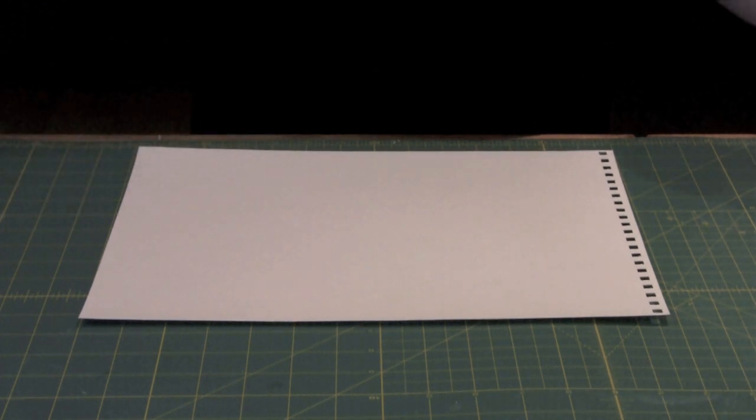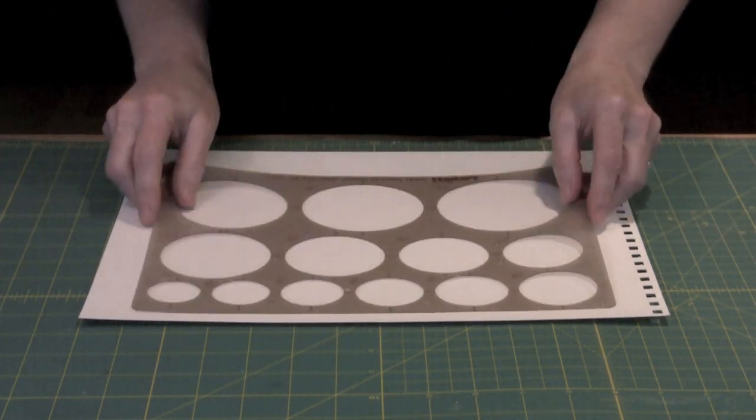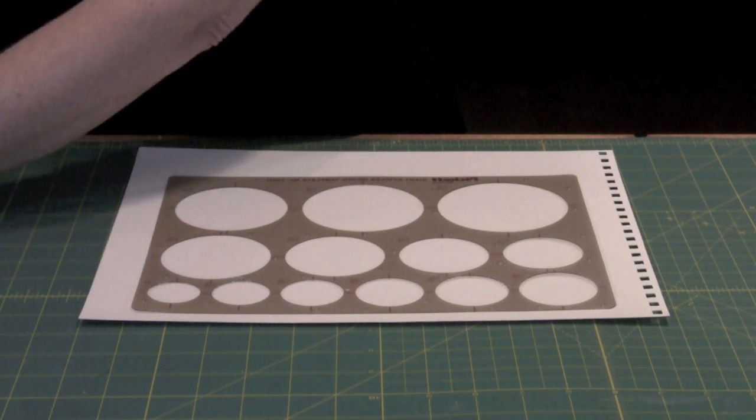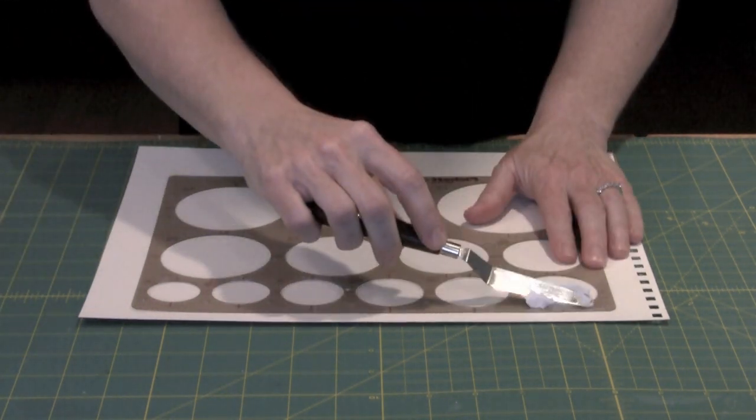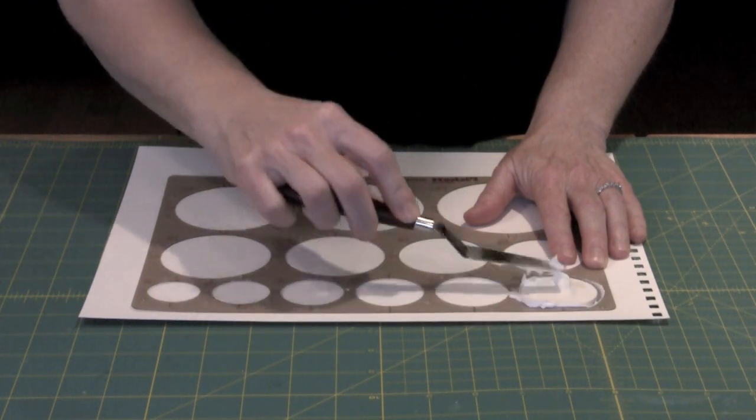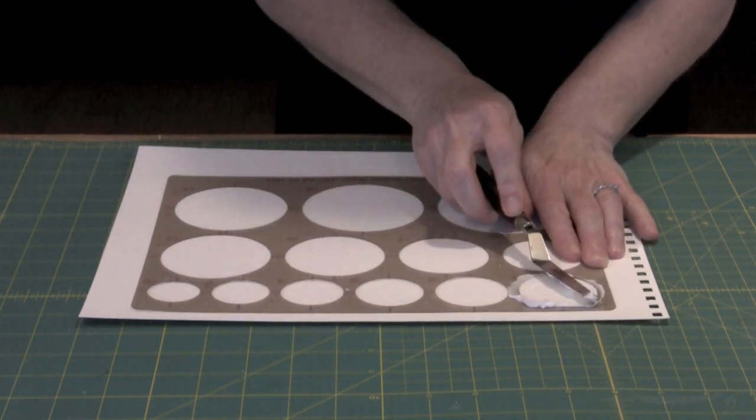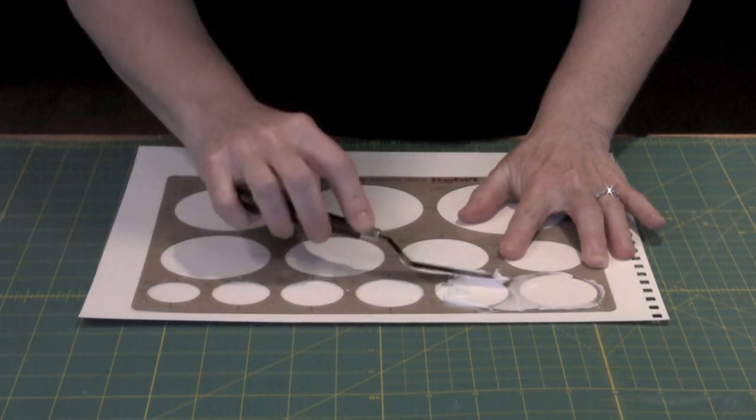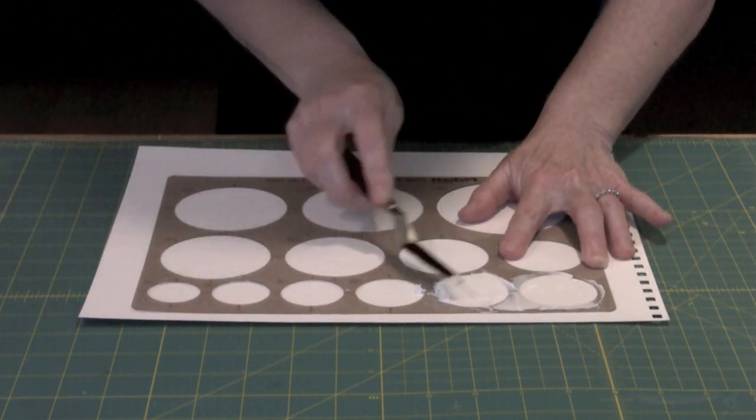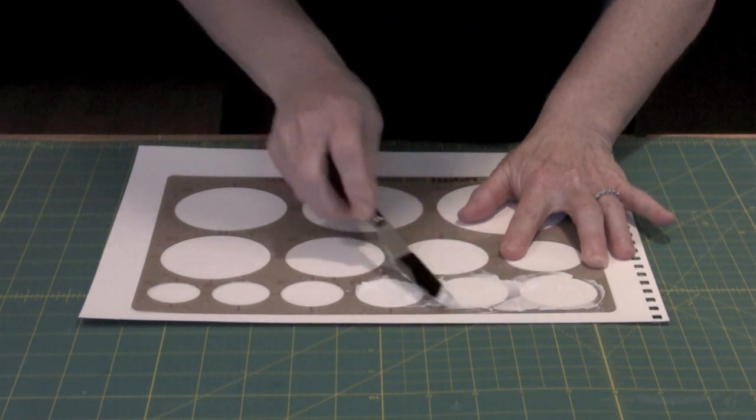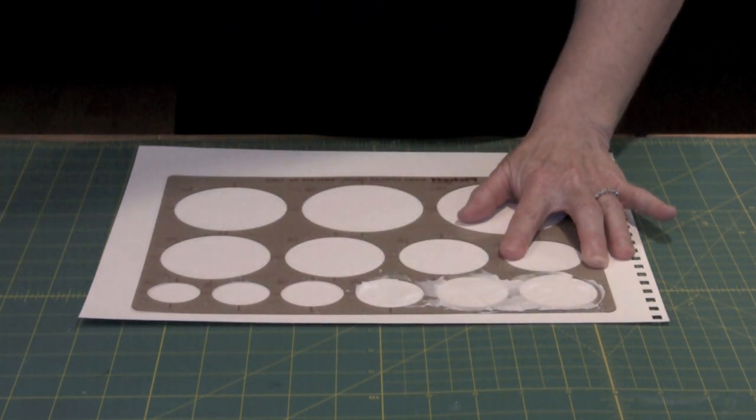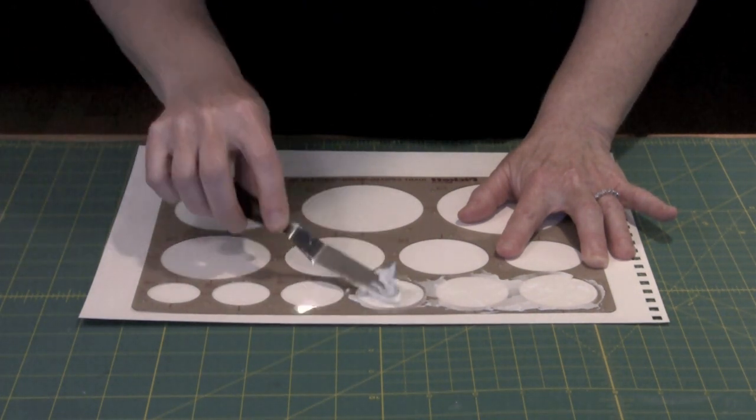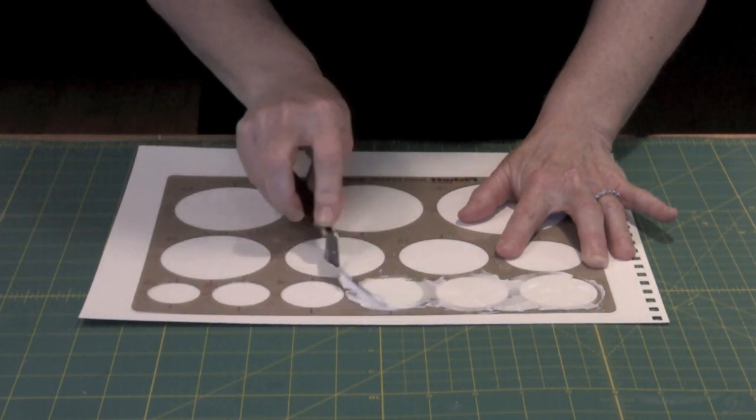What we're going to do now is use this same circle template and I'm going to show you how you go ahead and get the paste through the template. It's really as simple as this. You just hold that in place and then you smear the paste into the circles. You can smooth these out if you want to make them really smooth or you can leave them a little bit textured on the top.